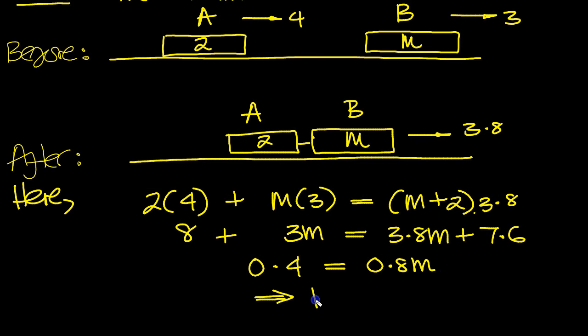So that tells us, reading from right to left, M is equal to 0.4. Move this from times to divide. 0.4 over 0.8 is, when you tap it in the calculator if you need to, is a half. So it's a half kilogram.